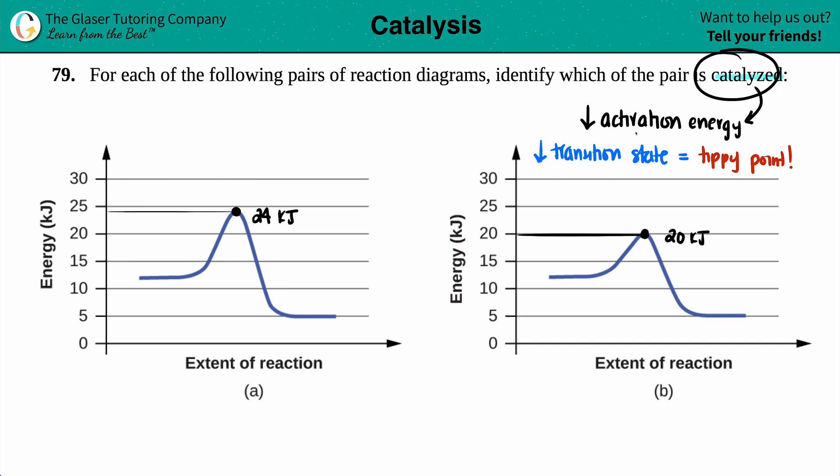The catalyzed reaction will always have the lower tippy point, the lowest transition state, the lowest point. So 20 versus 24, you got it right. This is the catalyzed reaction. So letter B is catalyzed, and that's it.